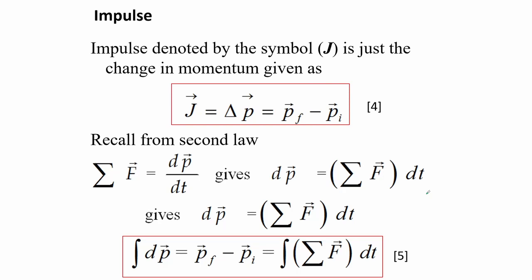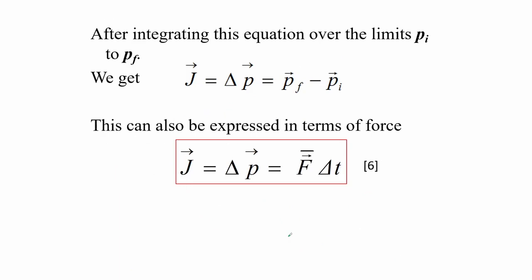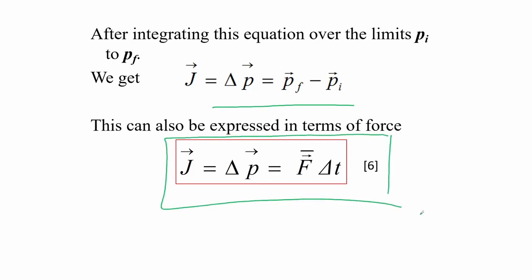Impulse, denoted by the symbol J, is the change in momentum. Note that impulse is also a vector quantity. We can rewrite impulse as an expression of force by recalling Newton's second law in terms of momentum: dp equals the sum of forces times dt, integrated from an initial to a final position. This gives us J equals the change in momentum equals force times change in time.